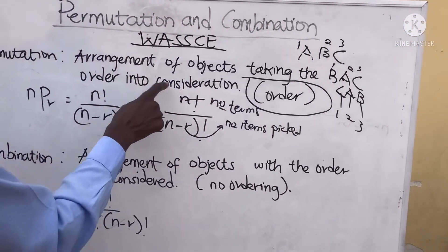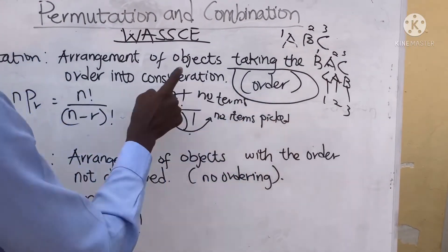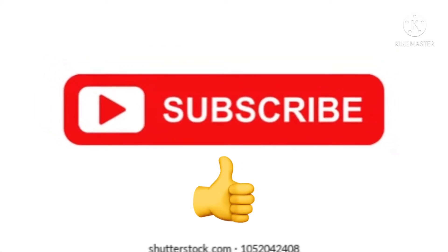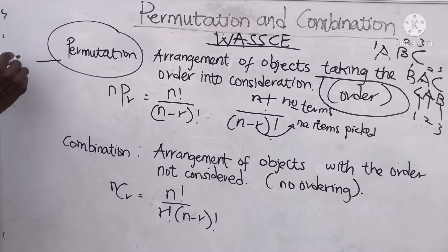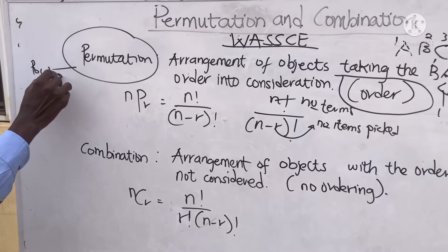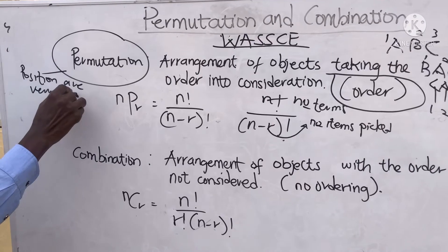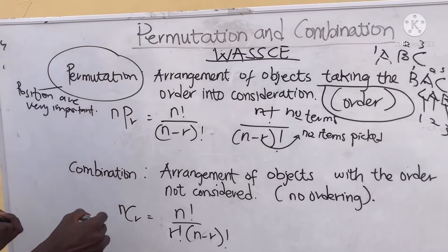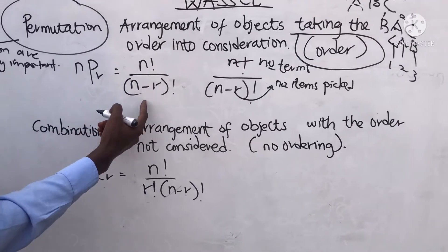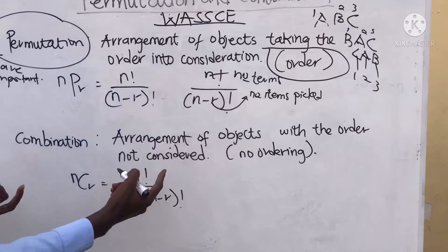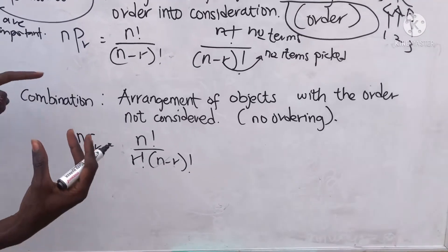When we say taking the order into consideration, we mean that the positions are very important in permutation. The formula is n factorial over n minus r factorial. We will solve one example on permutation, then move on to combination to establish the difference.